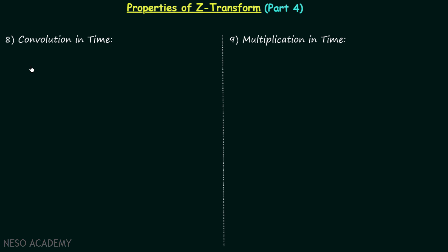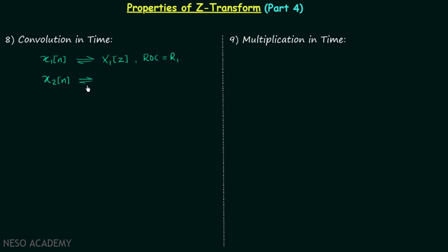Let's now understand and prove the convolution in time property of the Z-transform. We will assume there are two discrete time signals x1(n) and x2(n). The Z-transform of x1(n) is X1(z) with region of convergence R1, and the Z-transform of x2(n) is X2(z) with region of convergence R2.